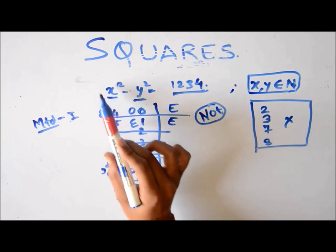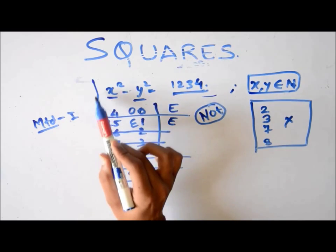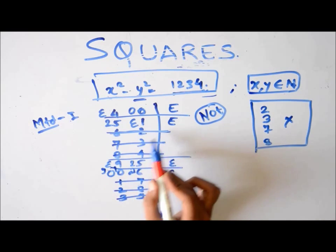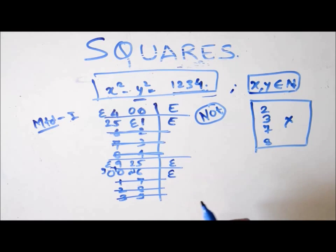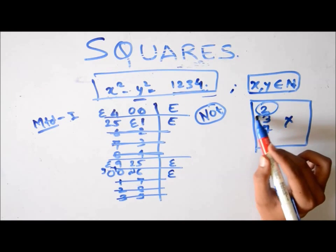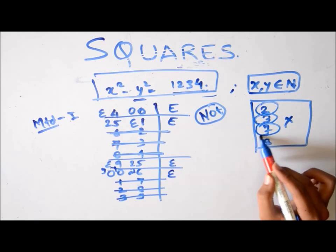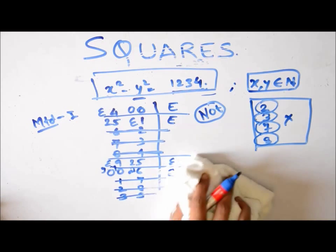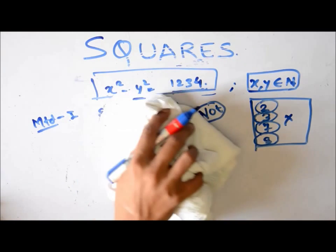So since we find that the second last digit should be even, in this case it's given odd. Therefore, not possible. No such x and y exist. No pair of x and y exists which satisfies this condition. It is not possible. This is one way you can look at this problem.